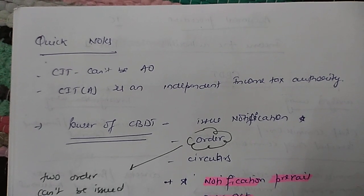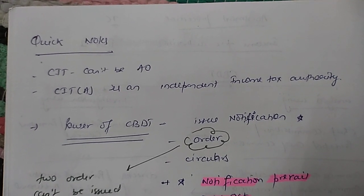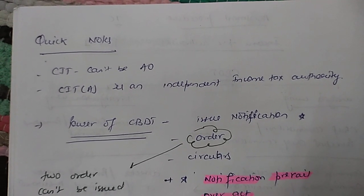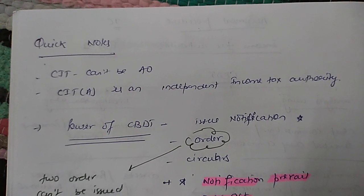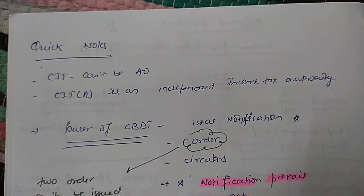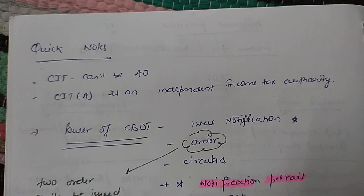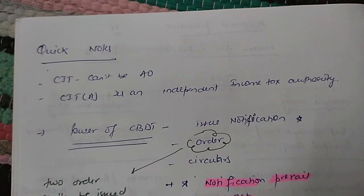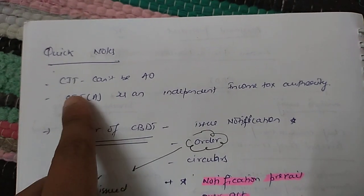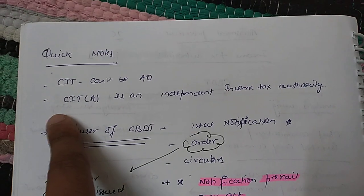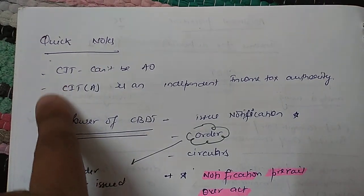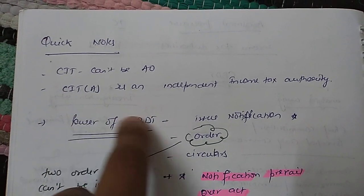Now let's look at two important points regarding income tax authorities. First, the Commissioner of Income Tax (CIT) cannot be your Assessing Officer. Only the Joint Commissioner, Assistant Commissioner, Deputy Commissioner, and Income Tax Officer in the Analysis Wing — and their parallel counterparts in the Investigation Wing — can be your Assessing Officer. Second, the CIT Appeals is an independent income tax authority. It is part of the income tax authority structure but functions as an independent authority.